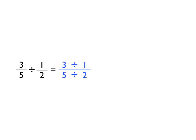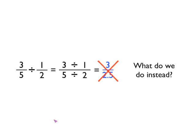If we use that same strategy that we just came up with, then we'll divide the numerator by the numerator, three divided by one, and the denominator by the denominator, five divided by two. If we do that, we end up with three divided by one is three for the numerator. Five divided by two is two and a half, or 2.5, for the denominator. But hold on a minute. We can't have decimal numbers in fractions. That's not allowed.